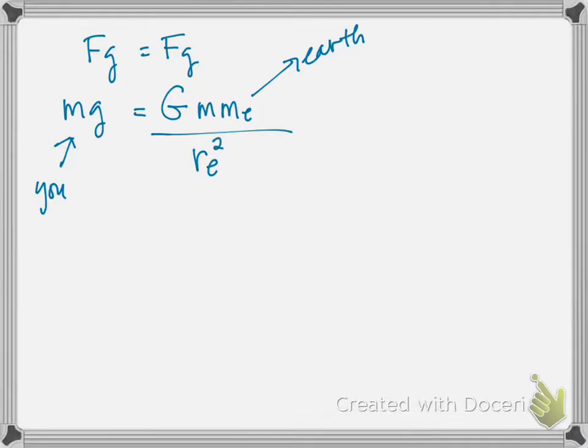So we've just set, we've got two different equations or expressions for the gravitational force. We're going to set them equal to each other and see what happens. So when we do that, your mass cancels out, and what we're left with is that our value for little g is equal to big G times the mass of the Earth over the radius of the Earth squared.